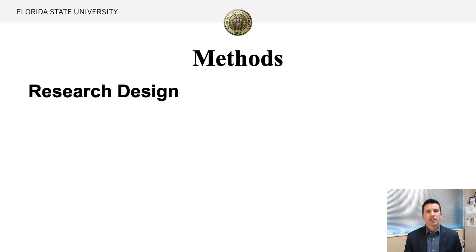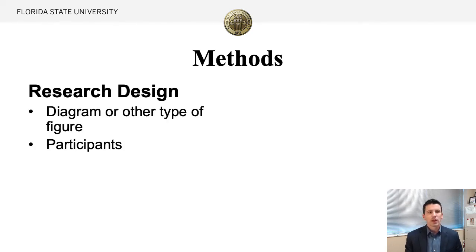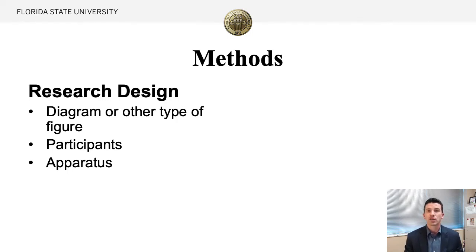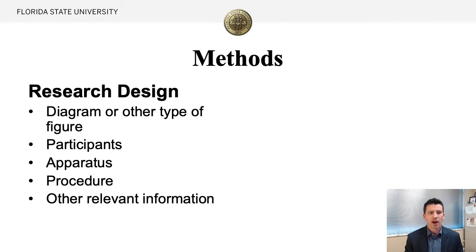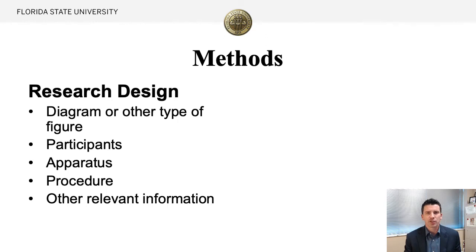When you get to your methods section, that's when you're going to talk about your research design if you have one. You might include a diagram or other type of figure if appropriate. You'll talk about your participants — who participated in your study. You may also talk about particular apparatus, computers, machines, or other types of equipment that you used. Include a procedure for answering your research question or addressing your hypothesis, and any other relevant methodology information. If this was a creative art project, you might talk about the materials or media used, or your process in creating the artwork. Highly encourage you to use visual aids, diagrams, or figures that can guide people through your methodology.